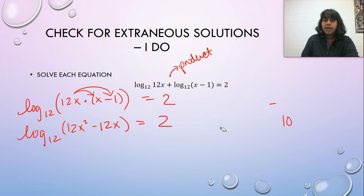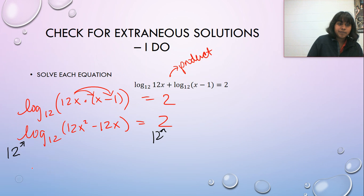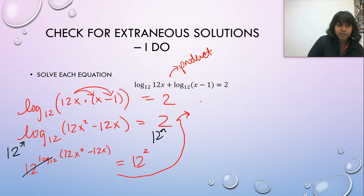So what am I actually going to take the base of both sides? I'm going to raise 12 to both sides. So I end up with 12 to the power log base 12 of 12 X squared minus 12 X equals 12 squared. All this cancels out because we got nice and lucky and because we forced it to. And so I end up with 12 X squared minus 12 X equals 12 squared, which is 144.